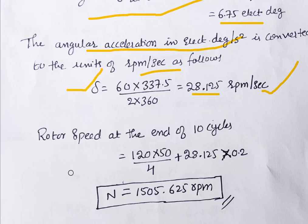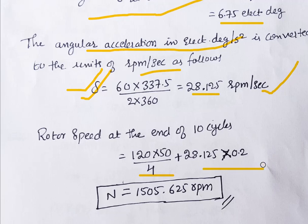The rotor speed at the end of 10 cycles (0.2 seconds) is: N = synchronous speed + acceleration × time = (120 × 50 / 4) + (28.125 × 0.2) = 1500 + 5.625 = 1505.625 rpm. This means the rotor speed increased by approximately 5.625 rpm due to the imbalance between mechanical input and electrical output.